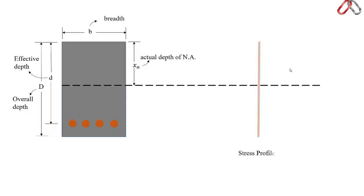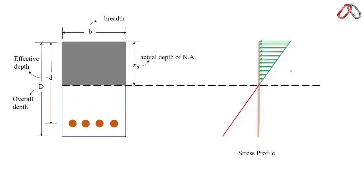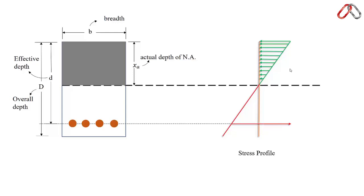The stress profile shows the upper portion in compression and the lower in tension. The second assumption states that tensile strength of concrete is not to be considered, so the area of concrete in the tension zone is neglected and all tensile stresses are resisted by the reinforcement.